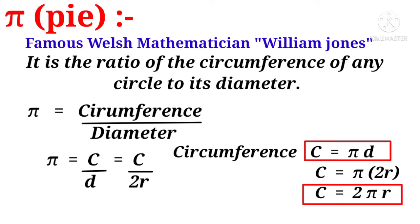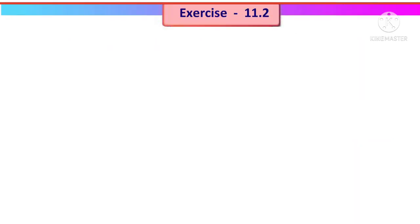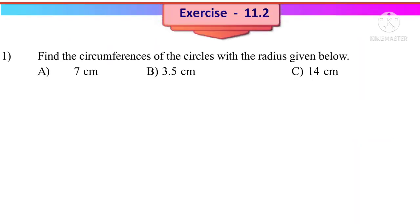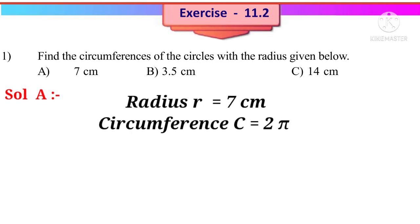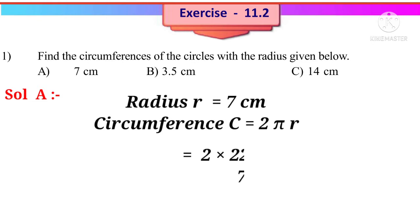Now let us do Exercise 11.2. First problem: Find the circumference of the circle with the given radius. Solution (a): Radius r equals 7 centimetres. Circumference C equals 2πr, that is 2 × (22/7) × 7. On simplification, 7 cancels with 7, giving 2 × 22 × 1 equals 44 centimetres.